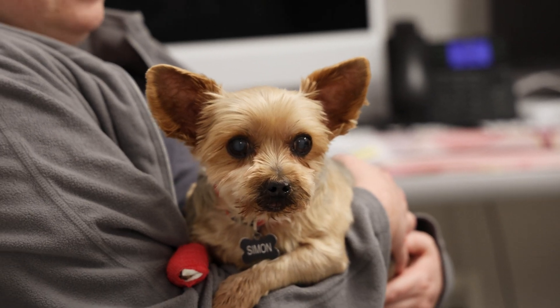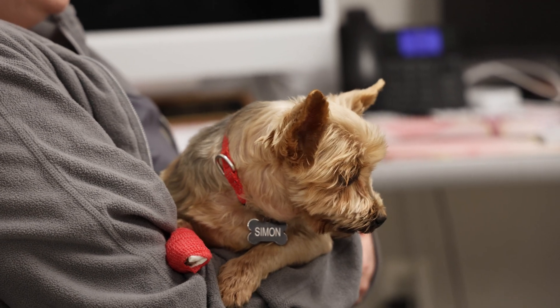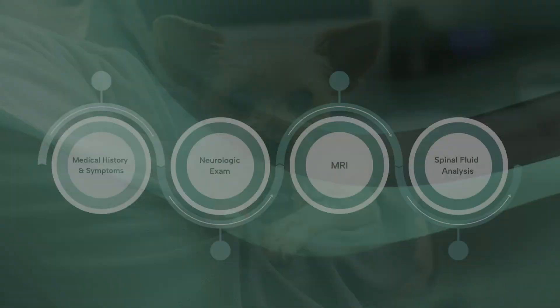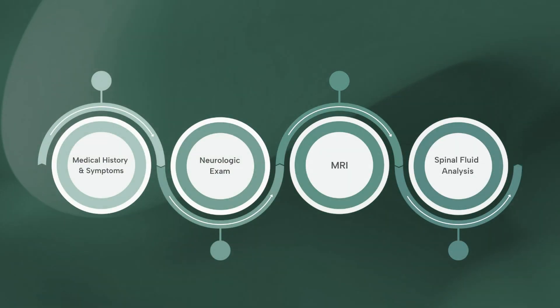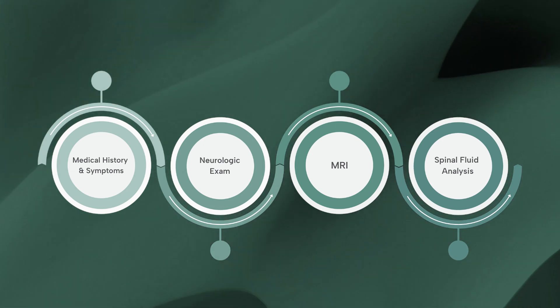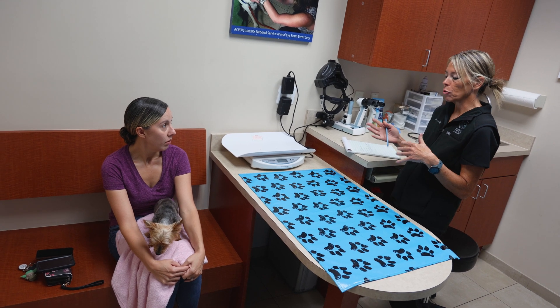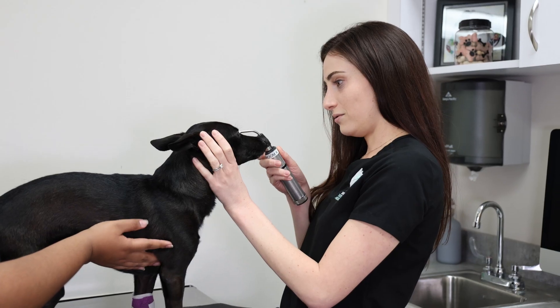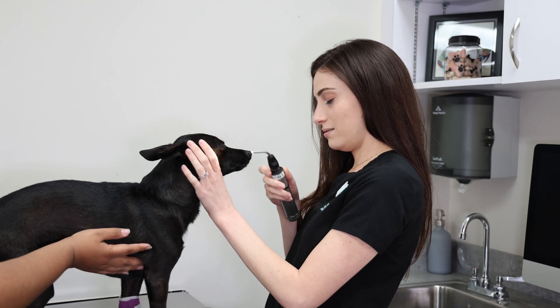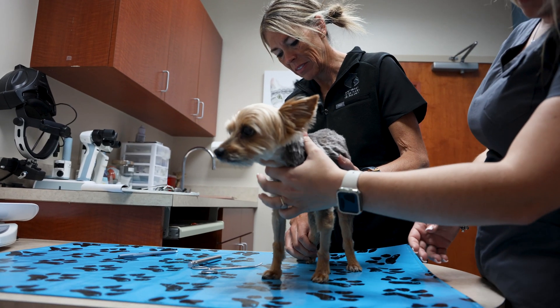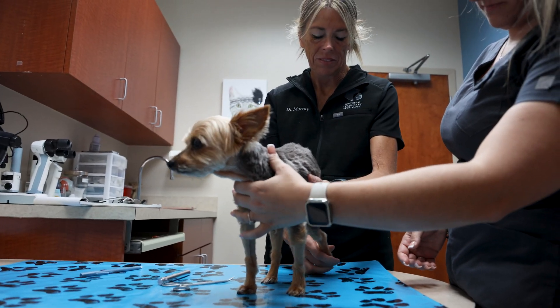Several other conditions can mimic the symptoms of meningitis and encephalitis, so an accurate diagnosis is crucial. There's no simple blood test for these conditions, and dogs don't always have a fever or aren't always acting sick. So we rely on medical history, examination, and tests. The medical history and symptoms help us narrow down whether it's a neurological problem, where in the nervous system the problem is, and help us come up with a list of possible causes. The neurological examination also helps localize where in the nervous system the problem is.